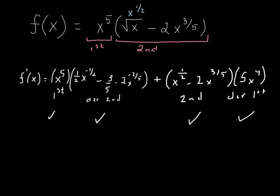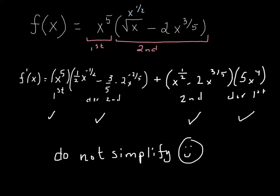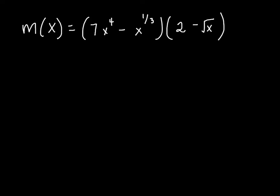And lastly, as you continue to study and understand the pieces there, notice that we do not need to simplify. Here we'll simply continue again. I'm going to underline 7x to the fourth minus x to the one-third as my first, and I'm going to underline 2 minus the square root of x as my second.